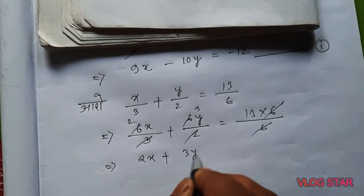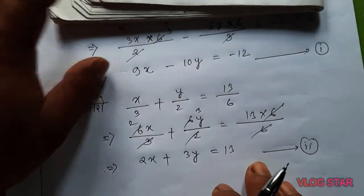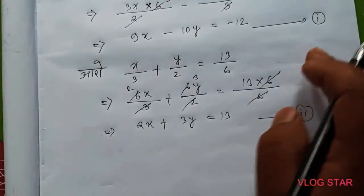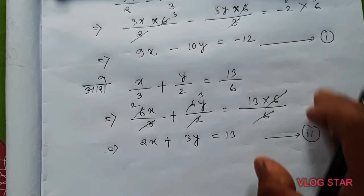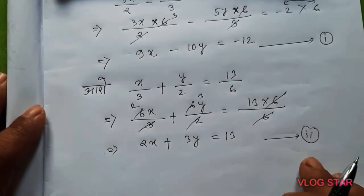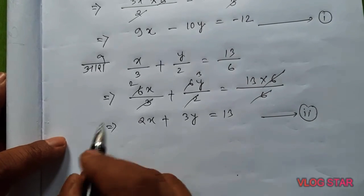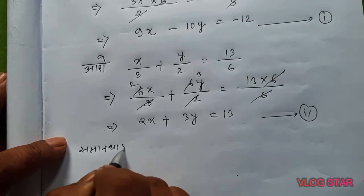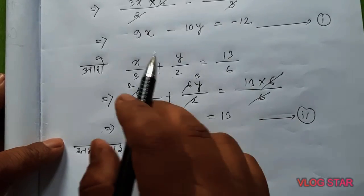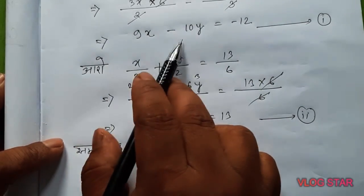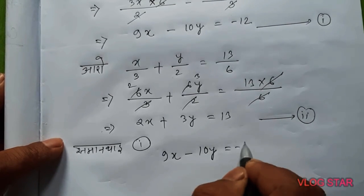We get 2x plus 3y plus 13. This is equation number 2. Next step is from equation 1. You have 9x minus 10y equal to minus 12. This is equation 1, because the constant in the equation is minus 12.